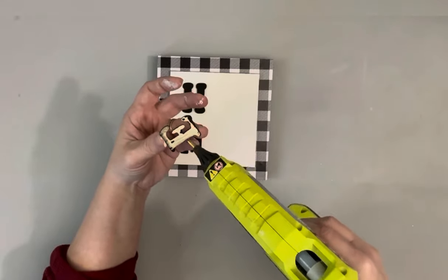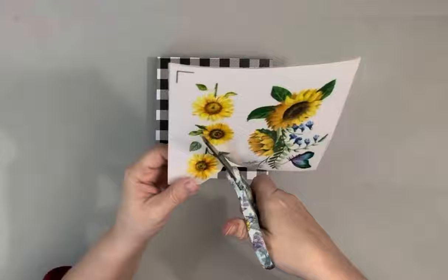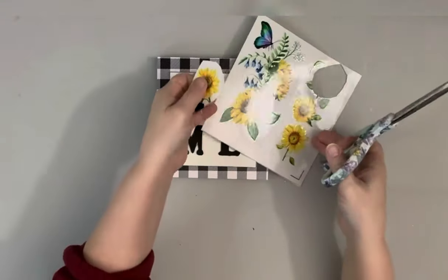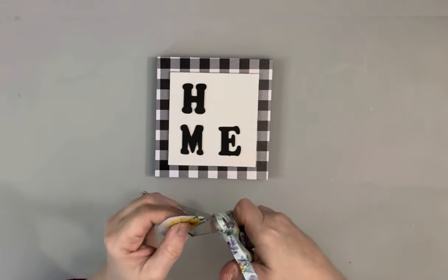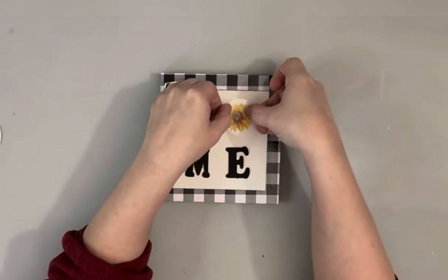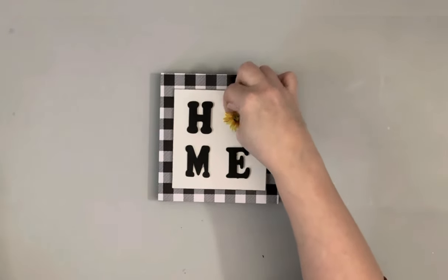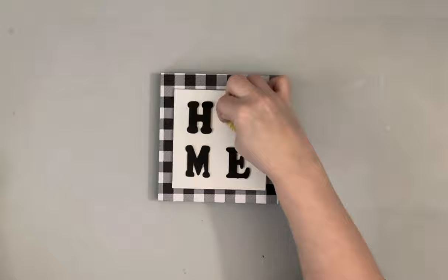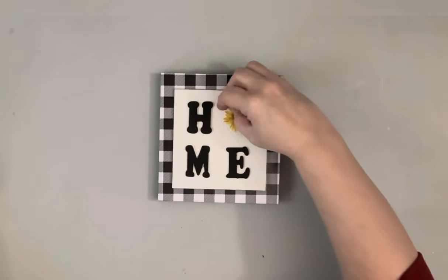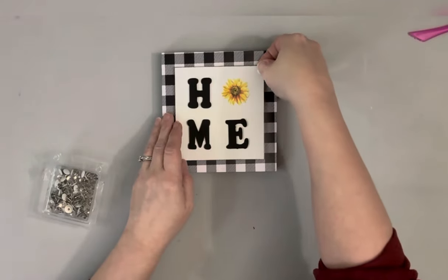Next I'm taking this rub-on transfer that I also got from Amazon. I cut one of the little sunflowers and made sure to trim up all the leaves—I just wanted the sunflower only. I placed that down in place of an O and just rubbed it with my fingernail. It comes off really easy from the backing, then I pulled off the film.